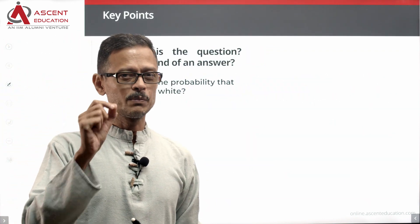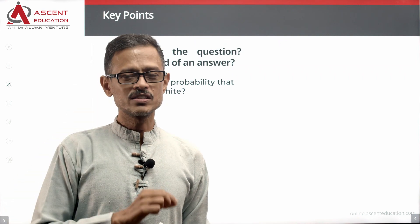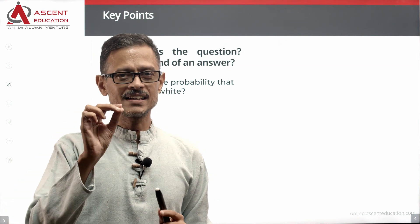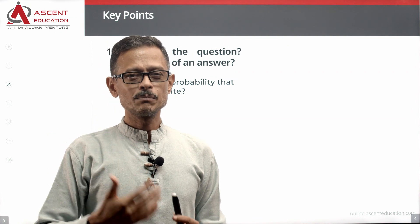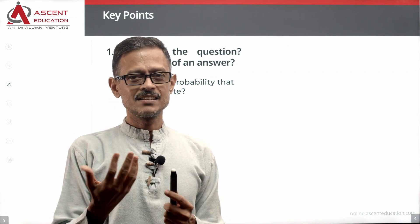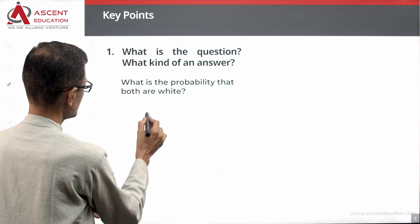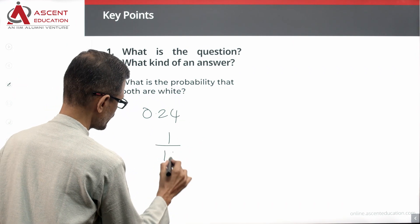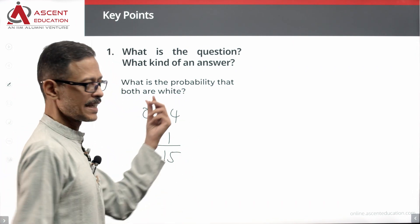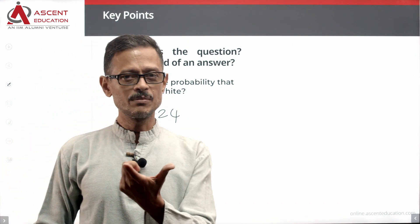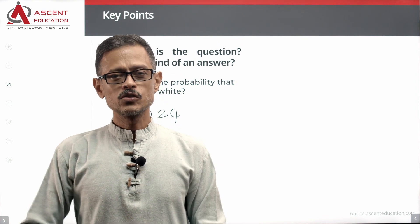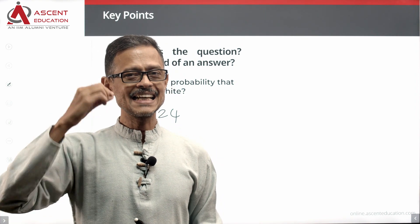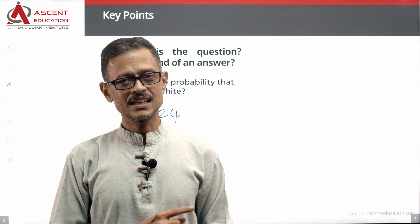What is the probability that the two socks taken happened to be white in color? What kind of answer will we get for this question? The probability might be 0.24, or 1 by 15 — it will either be a decimal or a fraction. We will get a number as an answer.